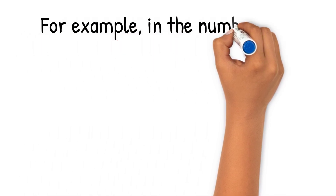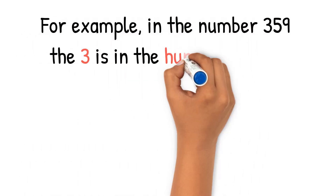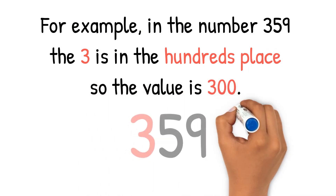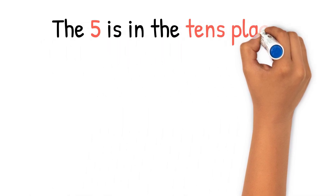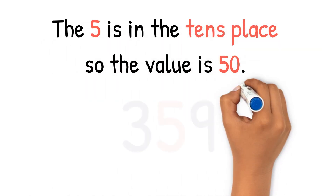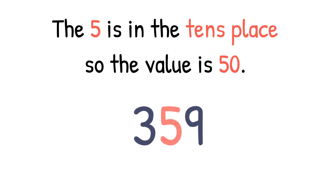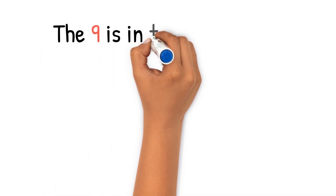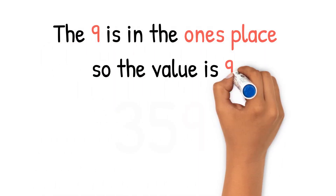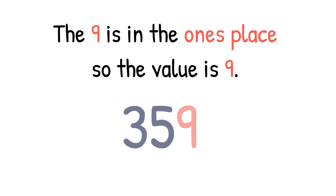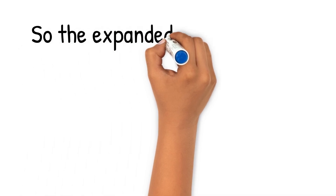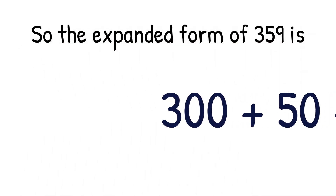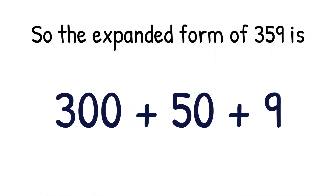For example, in the number 359, the 3 is in the hundreds place, so the value is 300. The 5 is in the tens place, so the value is 50. The 9 is in the ones place, so the value is 9. So the expanded form of 359 is 300 plus 50 plus 9.